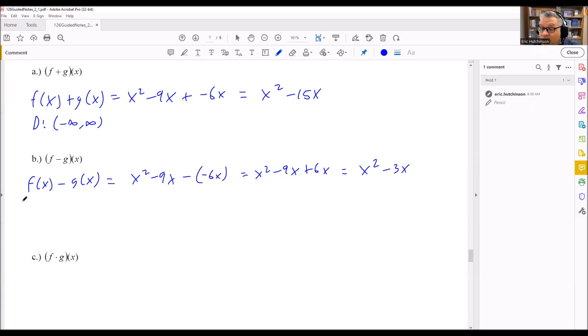Now we have to find the domain. Now once again, we have another polynomial, which means that again, there's no chance of us dividing by 0 or taking the square root of a negative number. So because of that, your domain is going to be all reals.